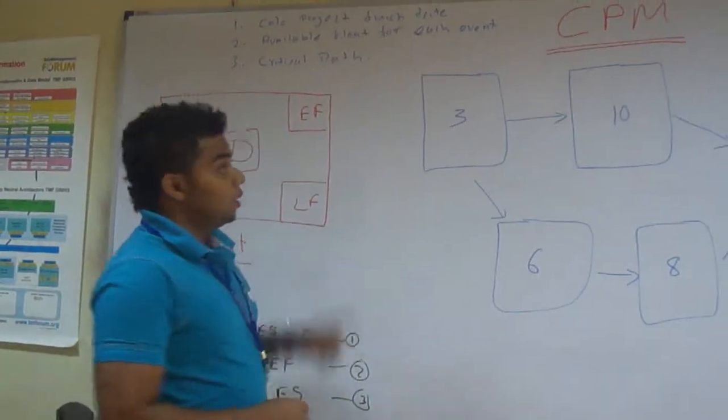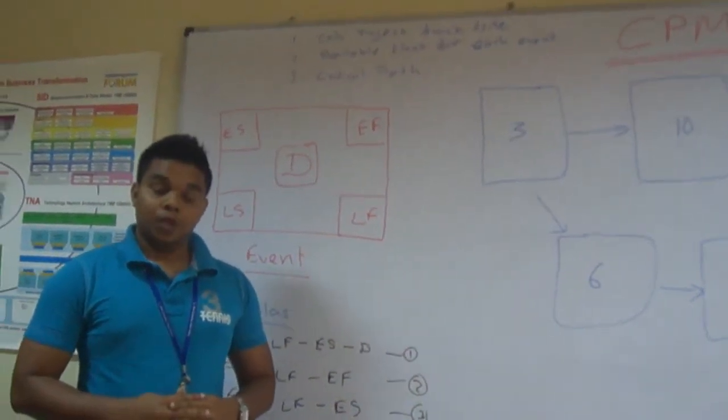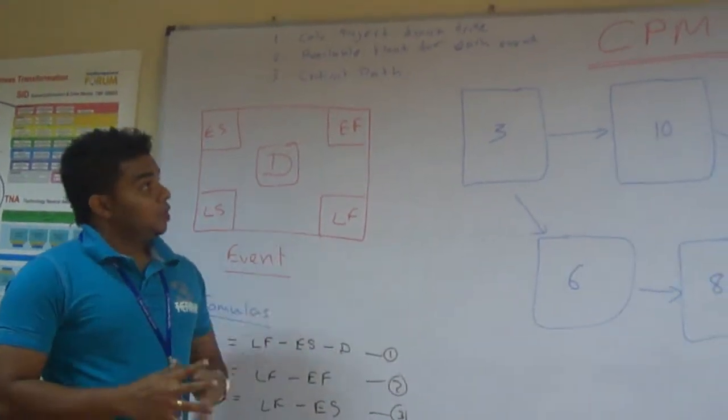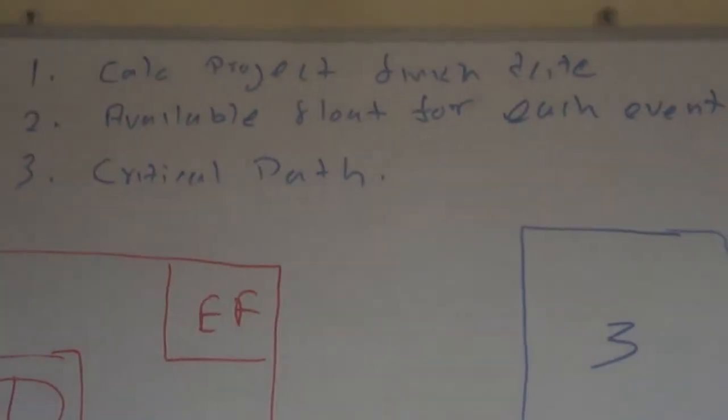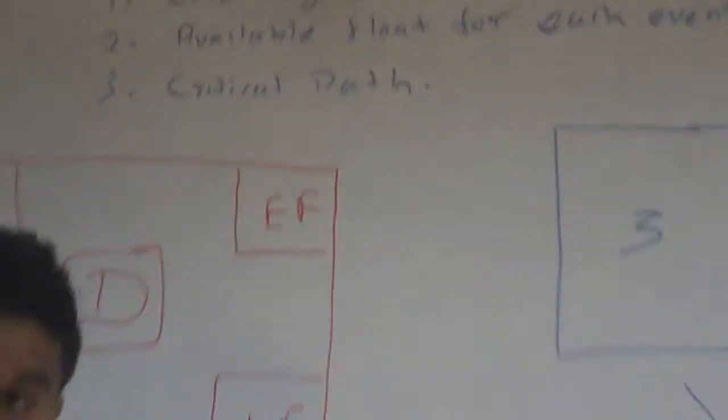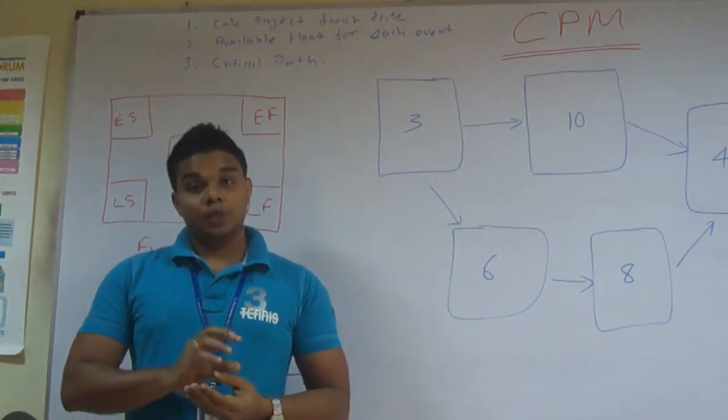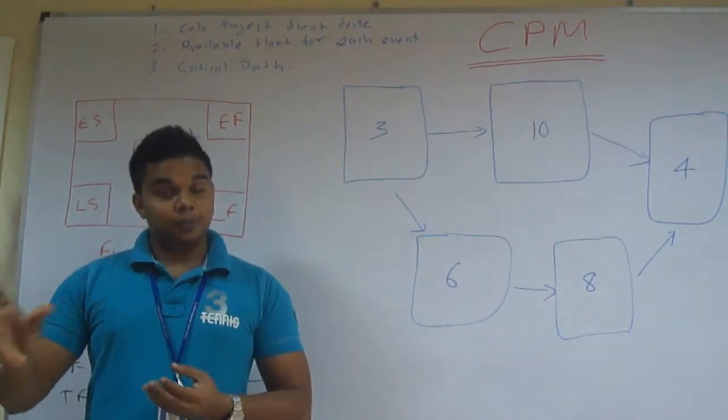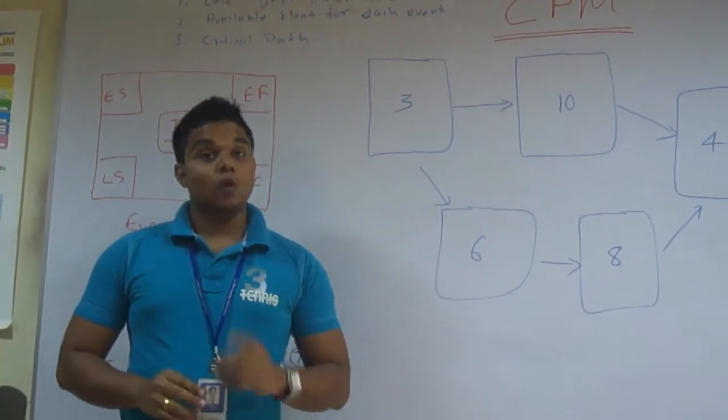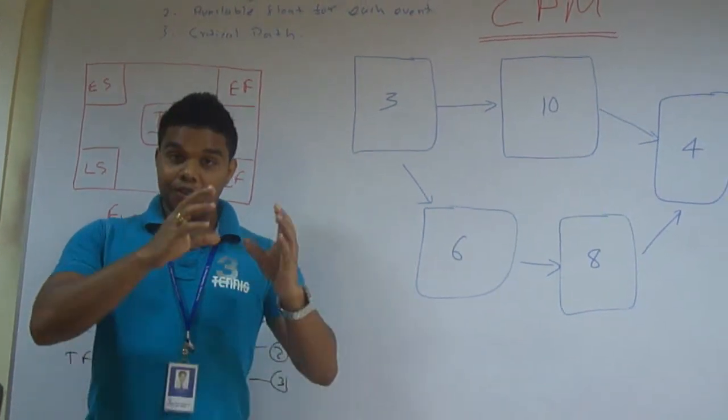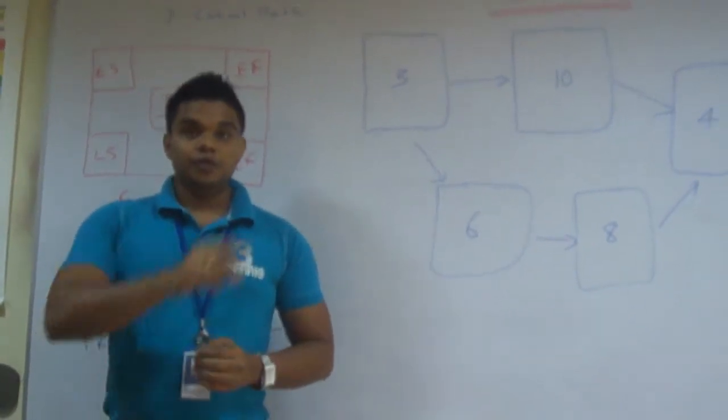I will list three reasons as to why we are using this in project management. First thing is by using CPM we can identify the project expected finish date and for each event what is the float available. Float means the time which you can shift a particular event without impacting the expected finishing date. And most importantly you can find out the critical path that means you can't delay any event which lies in the critical path without impacting your expected project finishing date.